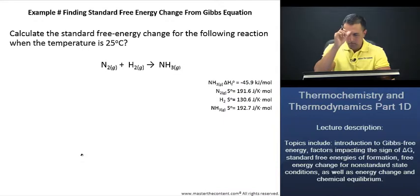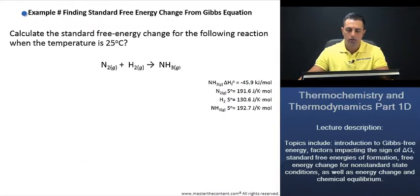Great. What are we being asked here? Example finding standard free energy change from Gibbs equation. Calculate the standard free energy change for the following reaction when the temperature is 25 degrees Celsius. Here we have nitrogen and hydrogen giving us the synthesis of ammonia.